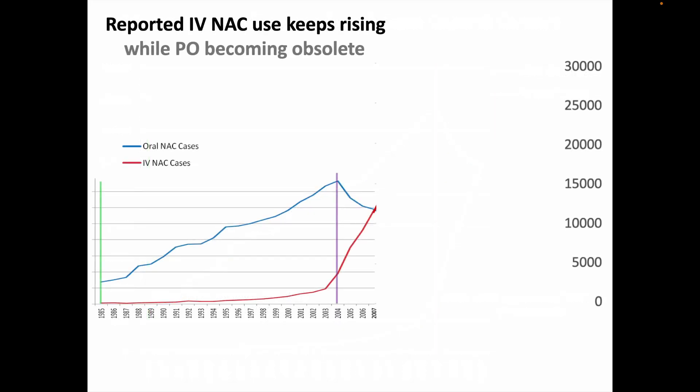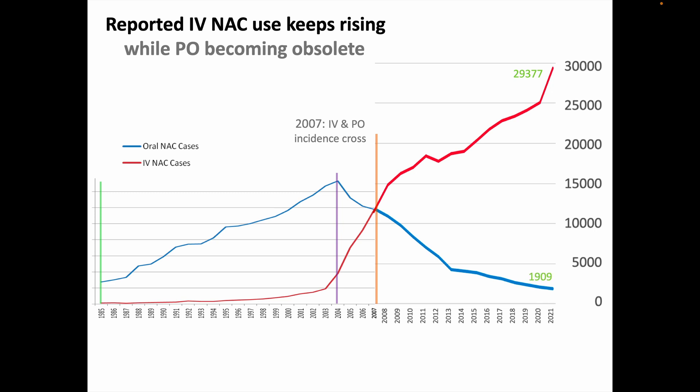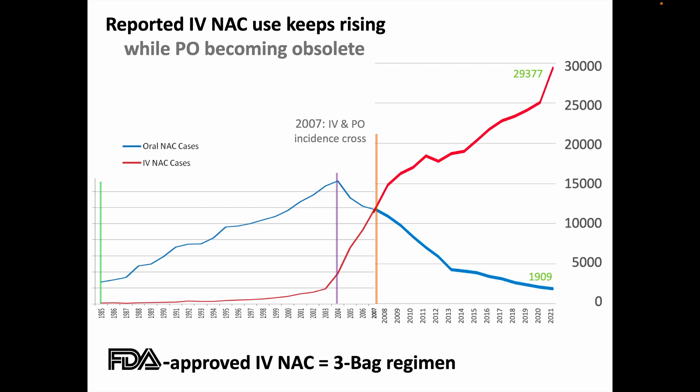Further annual data shows the incidence of IV administration continuing to increase. IV finally overtook PO NAC in 2007. In 2021, IV NAC was used about 15 times more often than PO. An FDA-approved IV NAC dosing involves a three-bag regimen.